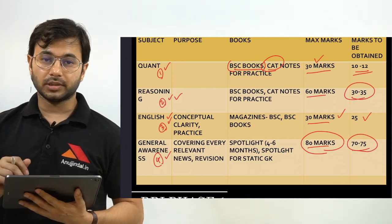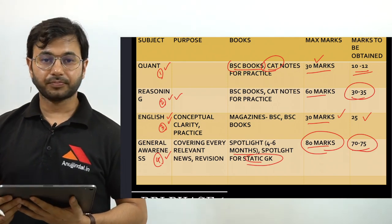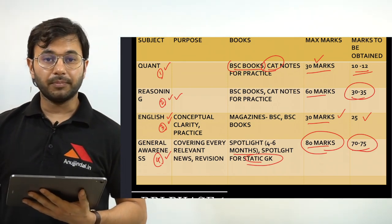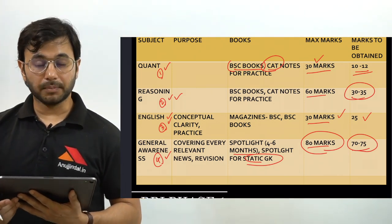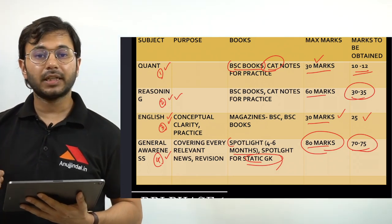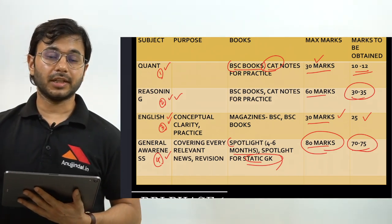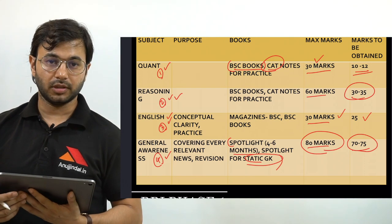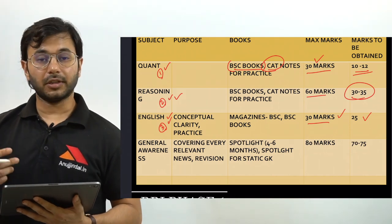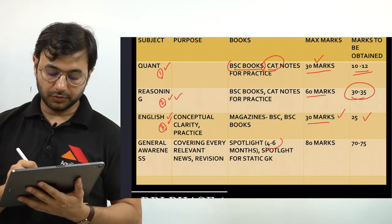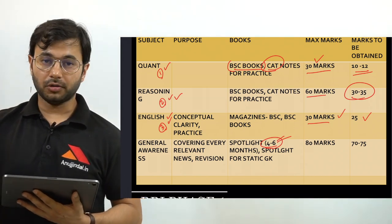General Awareness can be divided into two parts: current affairs and static GK. Fortunately, both have been covered thoroughly by me, and you can completely rely on the Spotlight magazine that I release every month for both the static and current affairs portions of General Awareness. For how many months to cover, four to six months is enough if you are preparing for Phase 1 of RBI or SEBI.